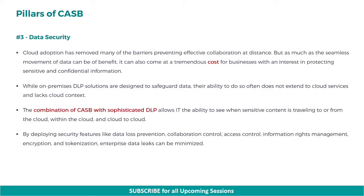The third pillar is data security. Cloud adoption has removed many of the barriers preventing effective collaboration at distance. But as much as the seamless movement of data can be of benefit, it can also come at a tremendous cost for businesses with an interest in protecting sensitive and confidential information. While on-premises DLP solutions are designed to safeguard data, their ability to do so often does not extend to cloud services and lacks cloud context. The combination of CASB with sophisticated DLP allows IT the ability to see when sensitive content is traveling to or from the cloud, within the cloud, and cloud to cloud. By deploying security features like data loss prevention, collaboration control, access control, information rights management, encryption, and tokenization, enterprise data leaks can be minimized.